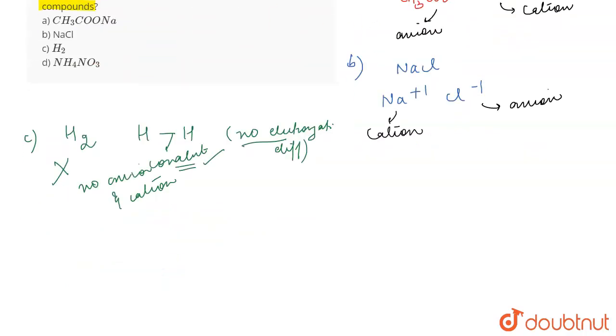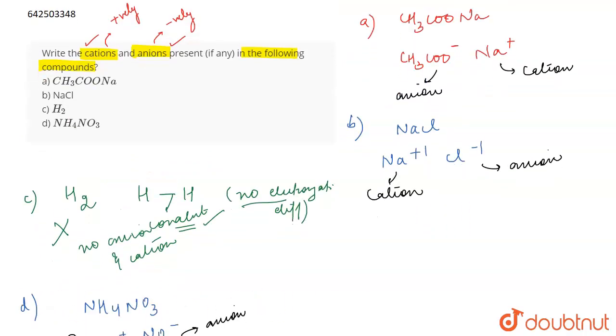Now talking about the d part, which is NH4NO3. In NH4NO3, NH4 is positively charged and NO3 is negatively charged. So we have NO3 negative as the anion and NH4 plus, which is ammonium ion, as the cation. So that's all for the question.